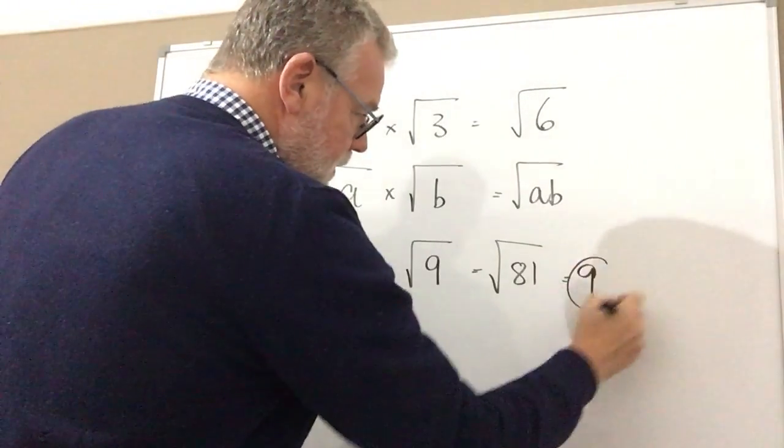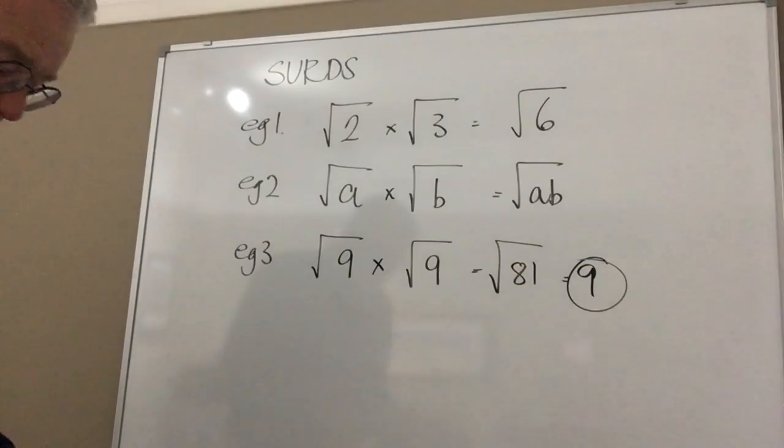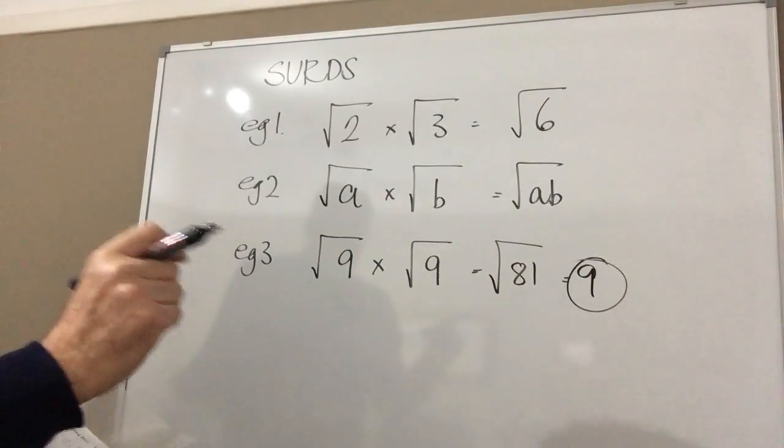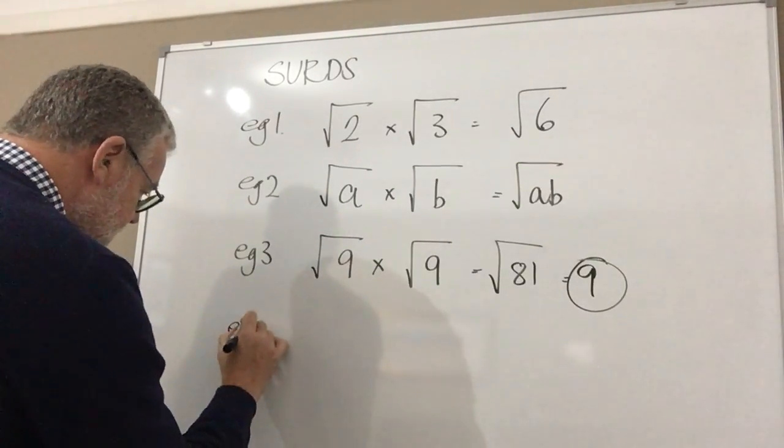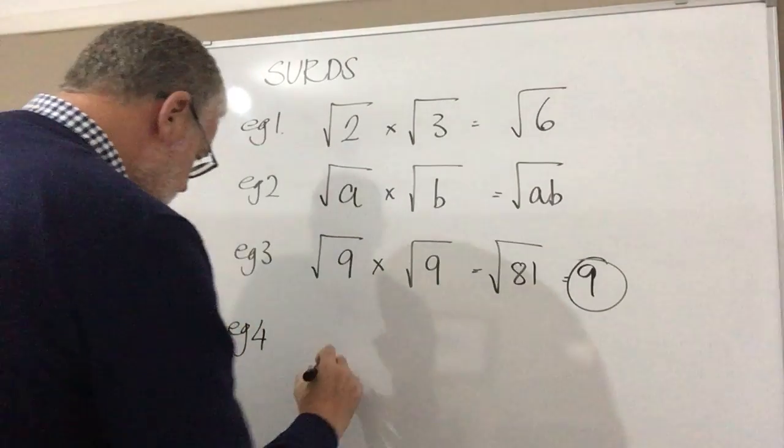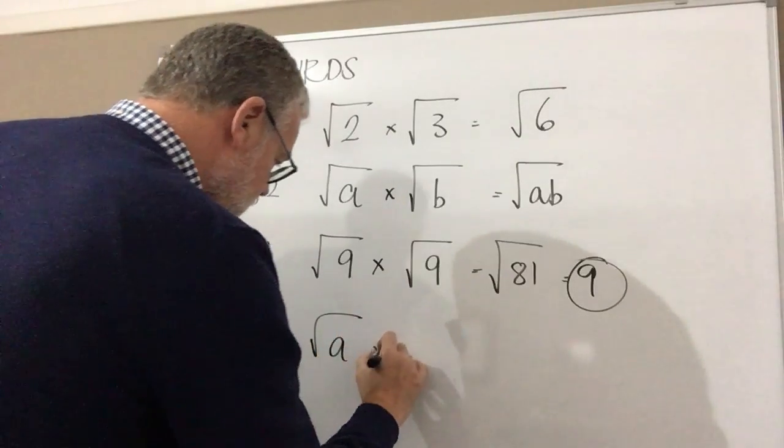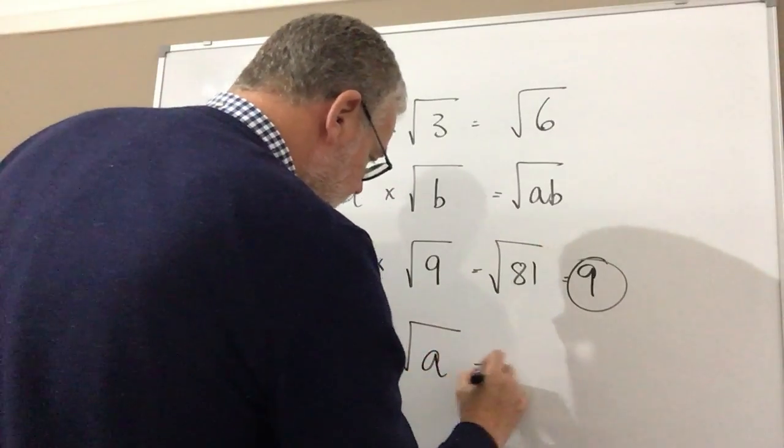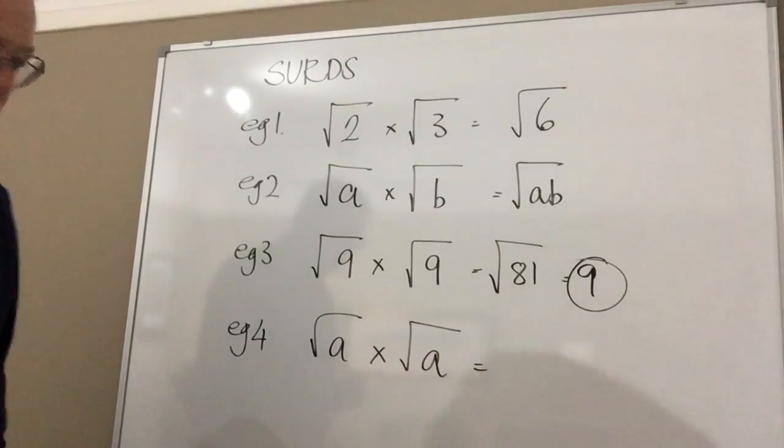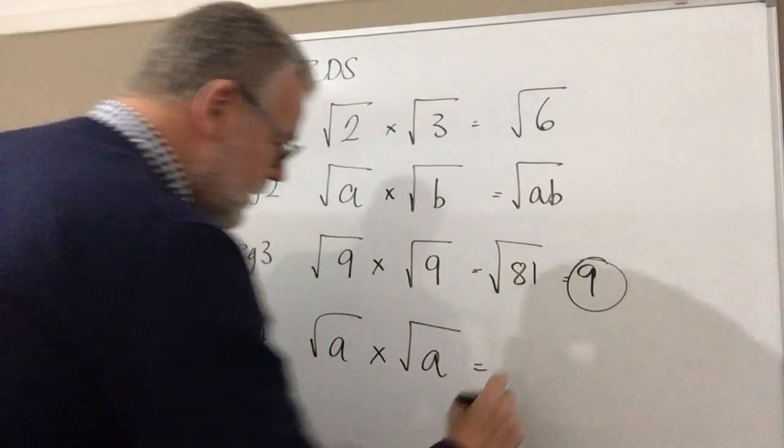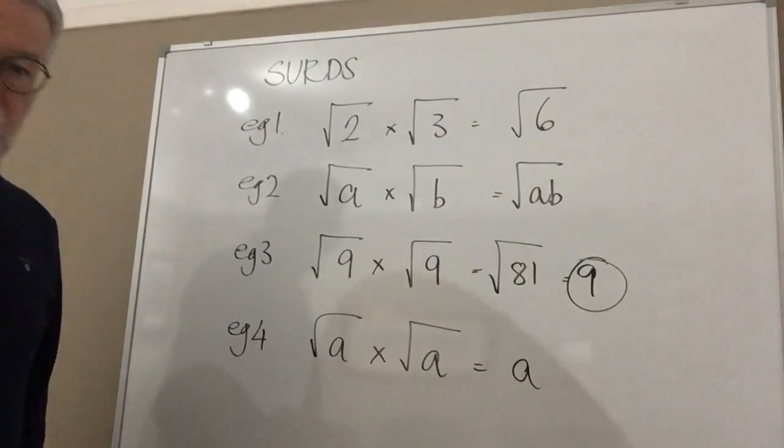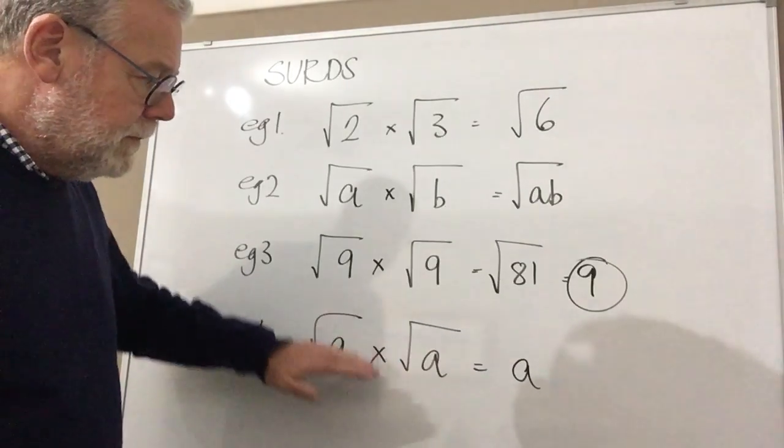So we get to root 81, so the answer is 9. Now again using our understanding of this, if I then said to you what is root a multiplied by root a? What's the answer? Remember when it's the same, it removes the root signs, so actually the answer would be a.